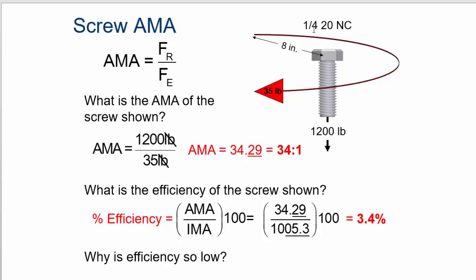1/4-inch diameter. We're using an 8-inch wrench, and we're putting 35 pounds of force on it, and we're getting 1,200 pounds of force out of the screw. So it's force resistance, 1,200, divided by force effort, 35. The answer is 34 to 1.